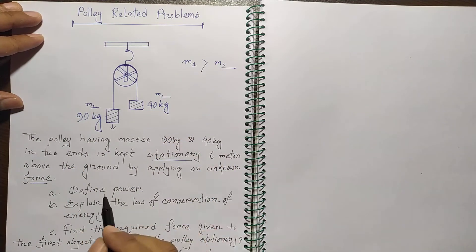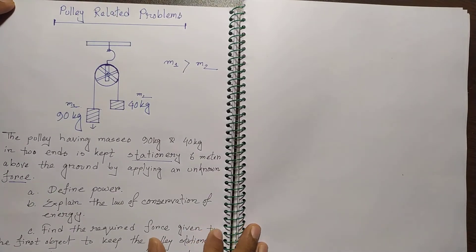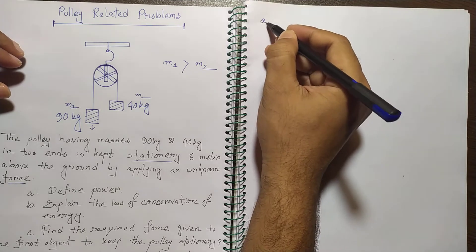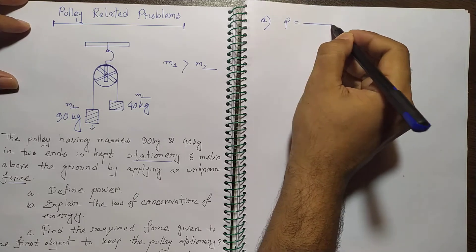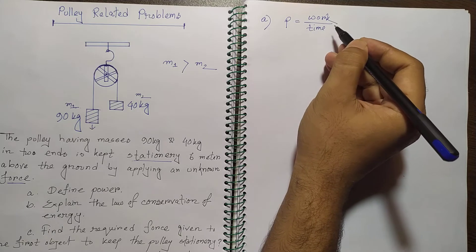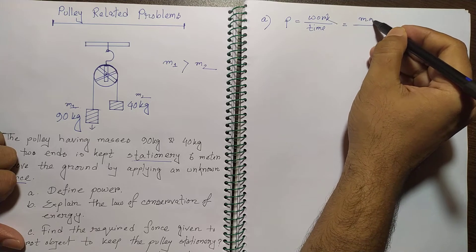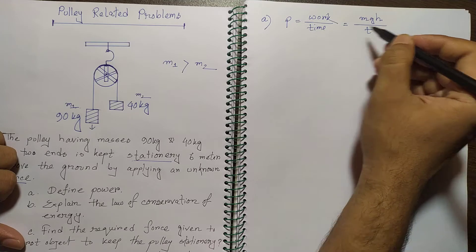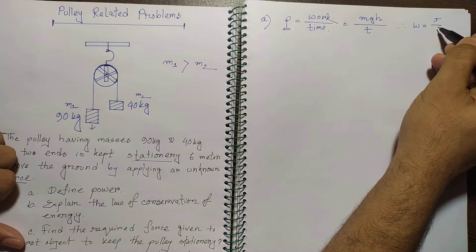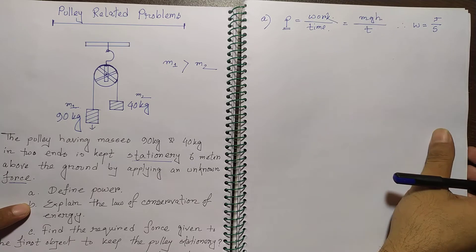The creative question asks for the definition of power. Power is the rate of doing work or the transformation of energy. We know that power equals work divided by time, and if the work is done by potential energy, then power equals mgh over t. The unit of power is the watt, which equals joules per second.